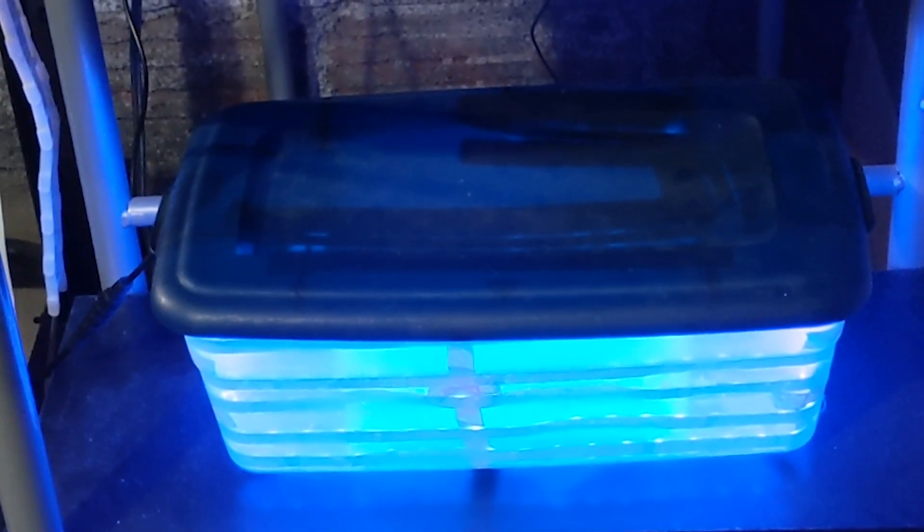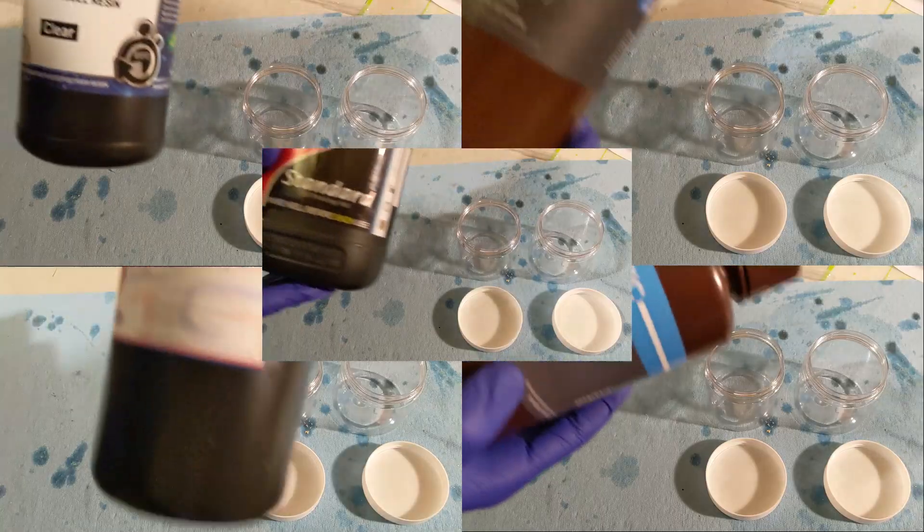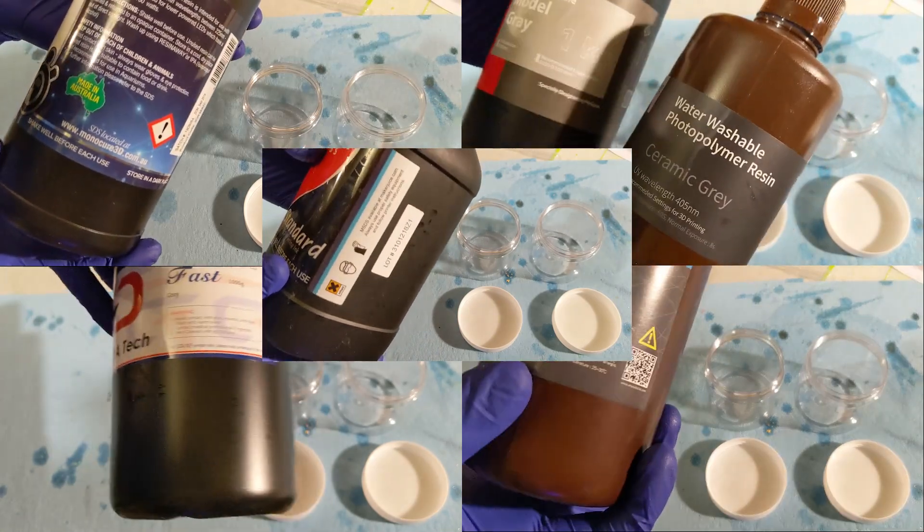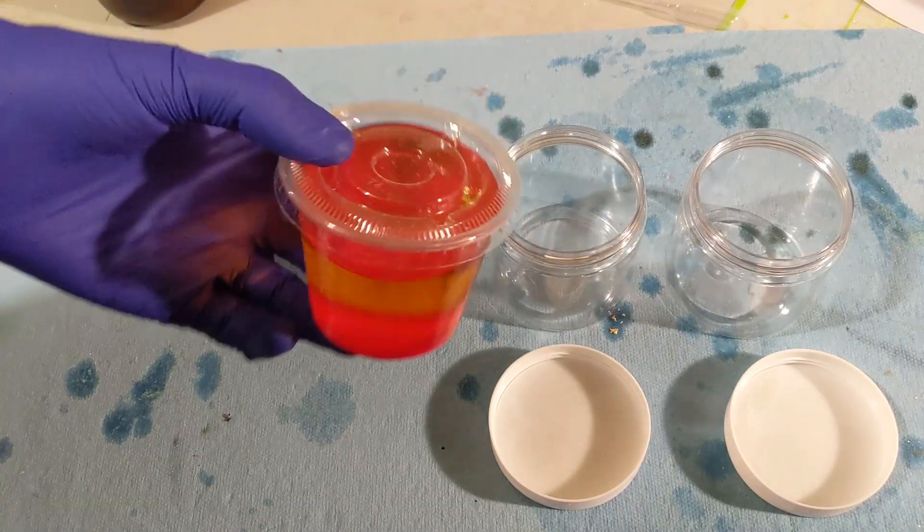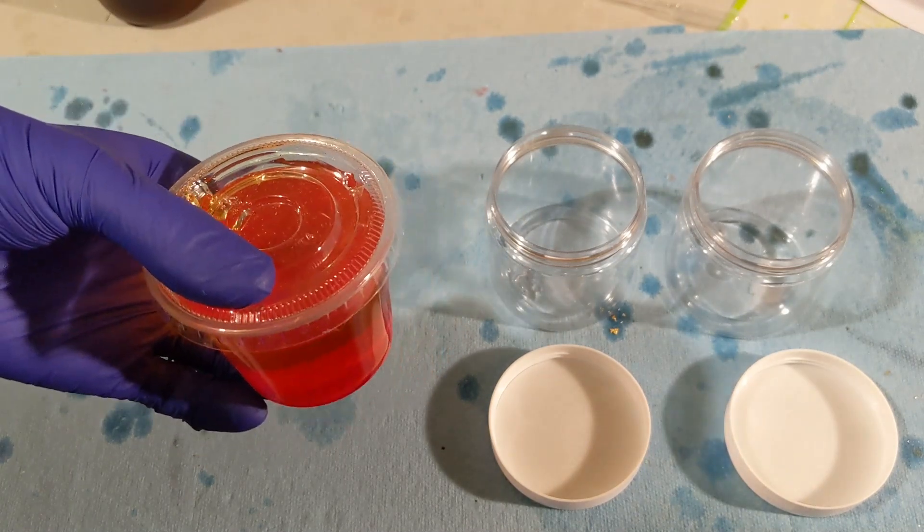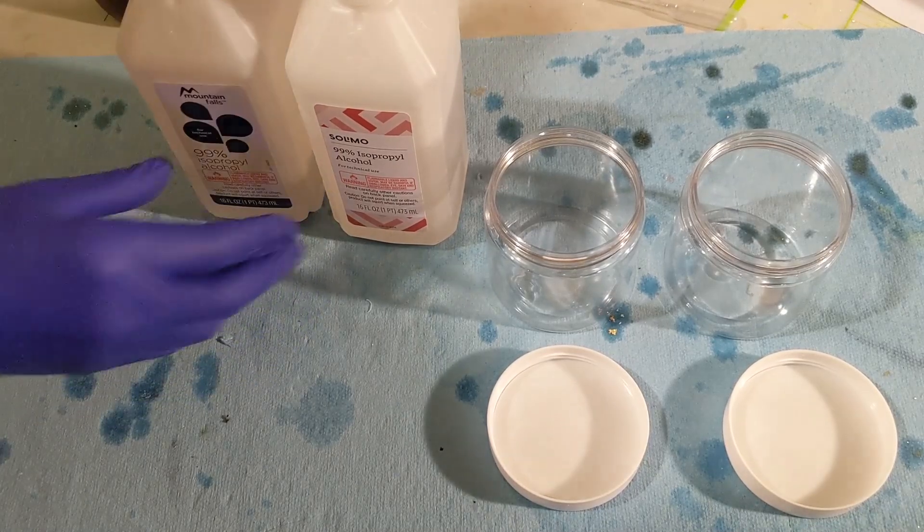And while that cures we'll go ahead and take care of my many empty bottles of resin. Now I have these little containers for condiments that I use to store my resin after I use it in the vat and I will also be using those same containers to pour the excess from the empty bottles into to then cure before throwing away.